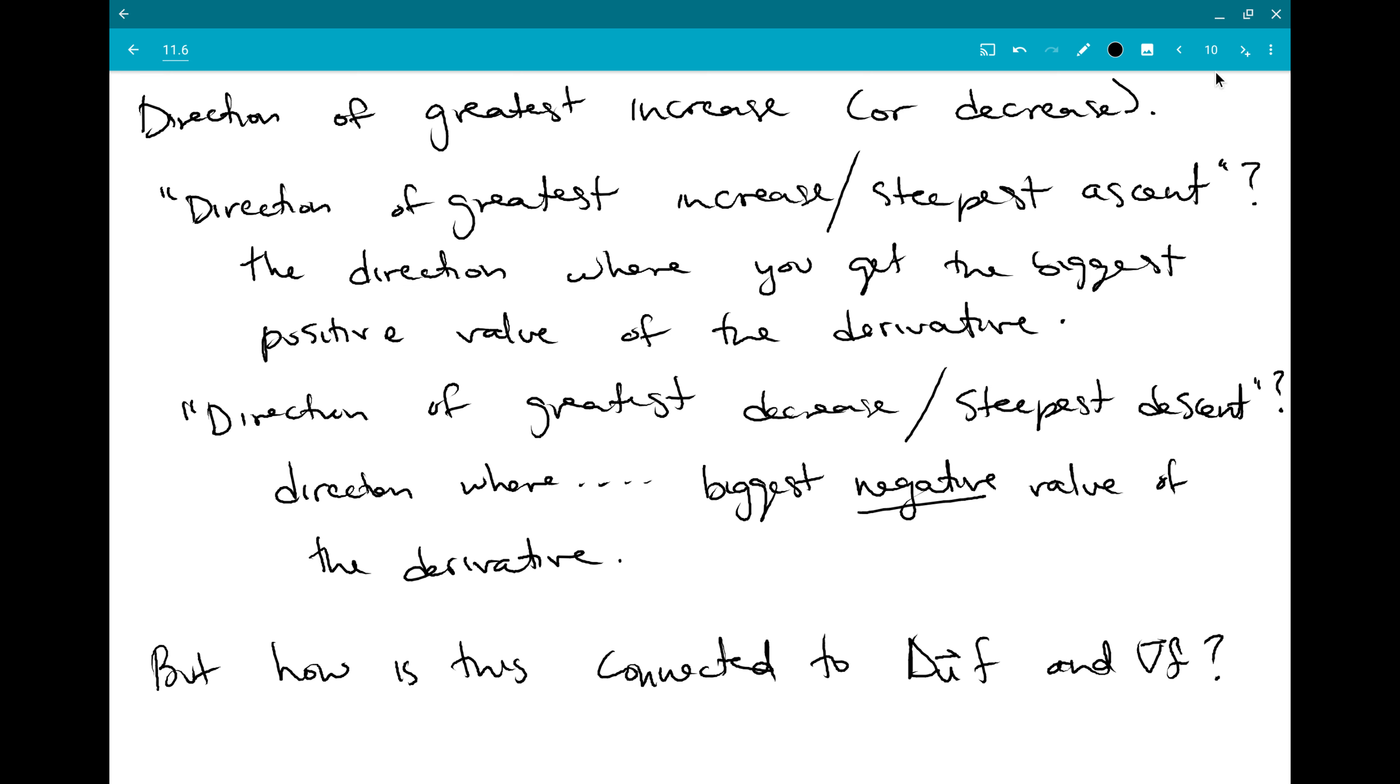But how are those two things going to be connected to d sub u f and grad f? For unit vector u and some f that gives us grad f.